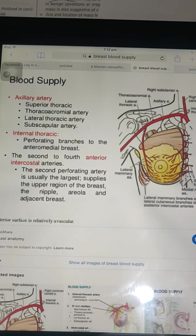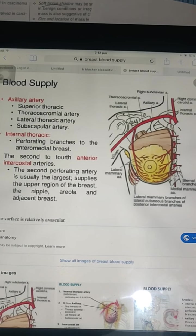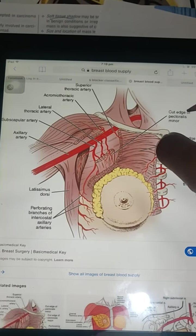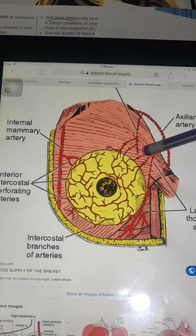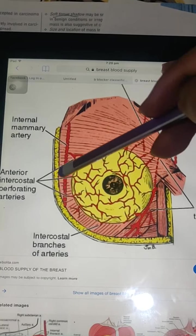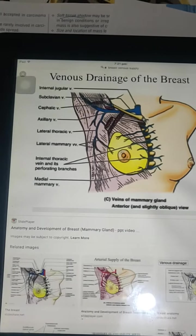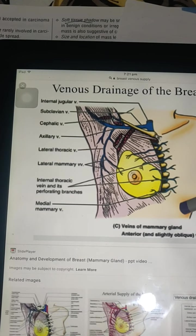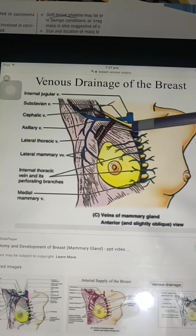This is the second, third, and fourth intercostal artery. For venous drainage, the venous drain is from the breast, and the axillary artery is related to the lateral thoracic artery.